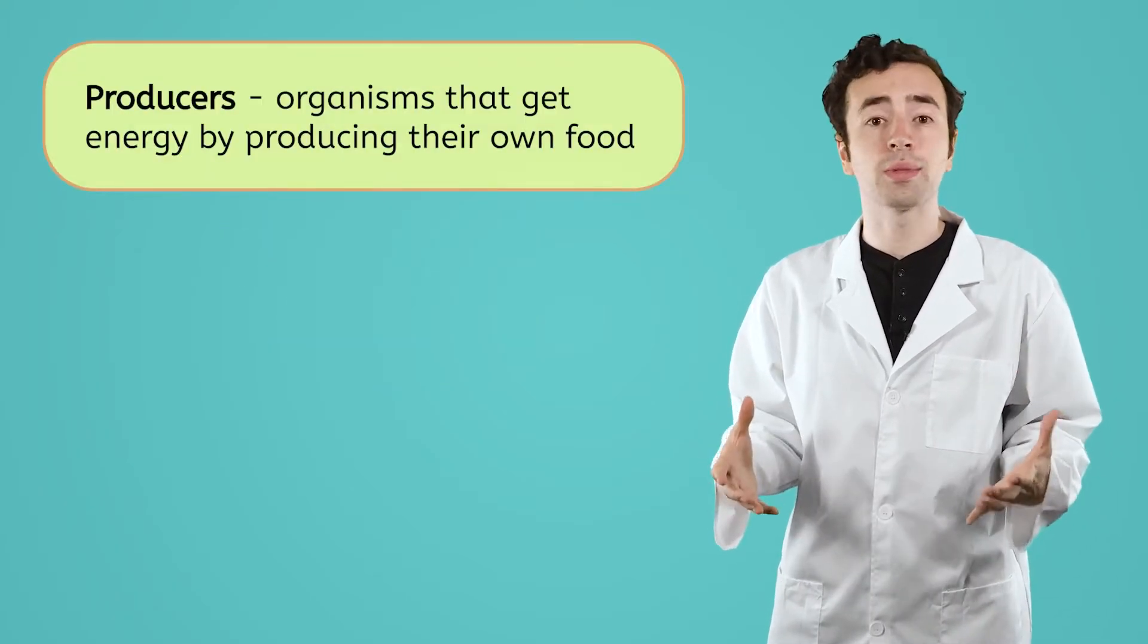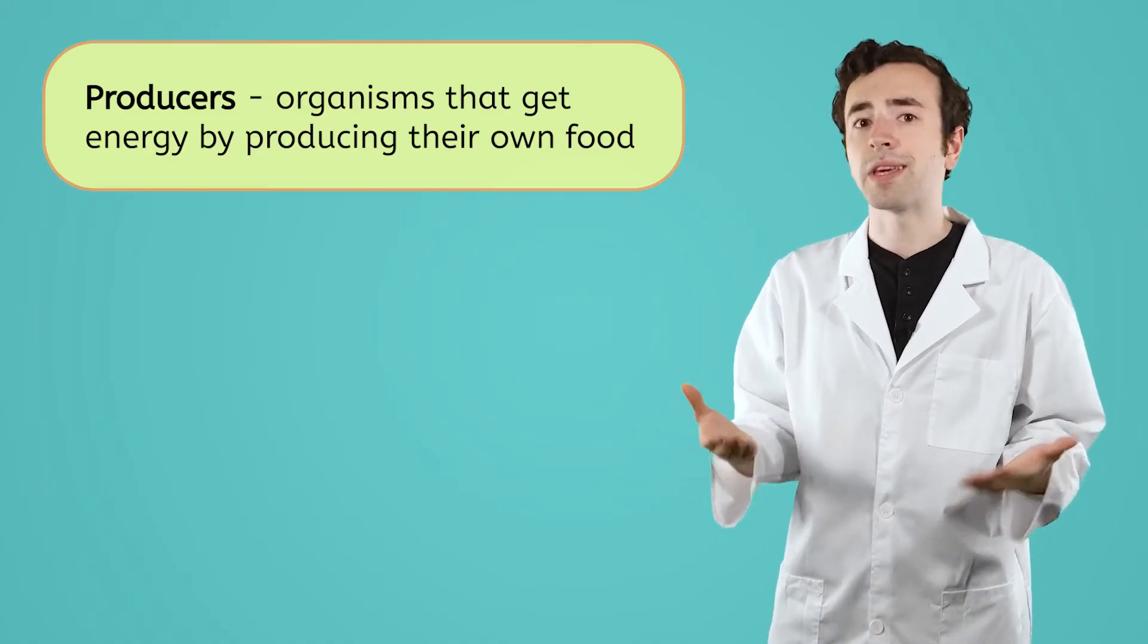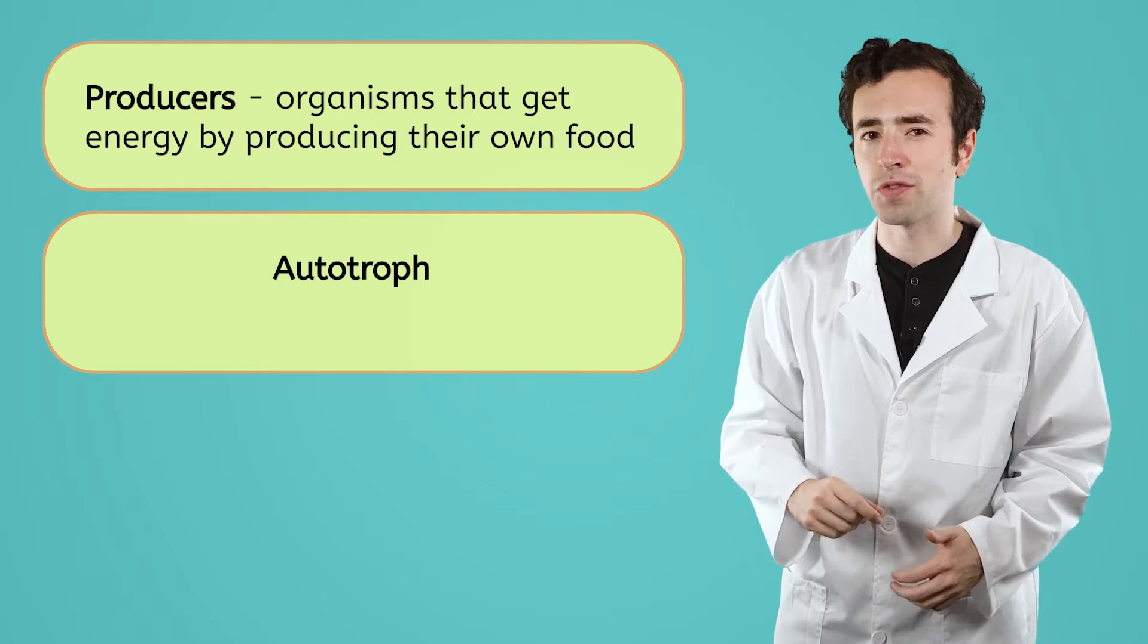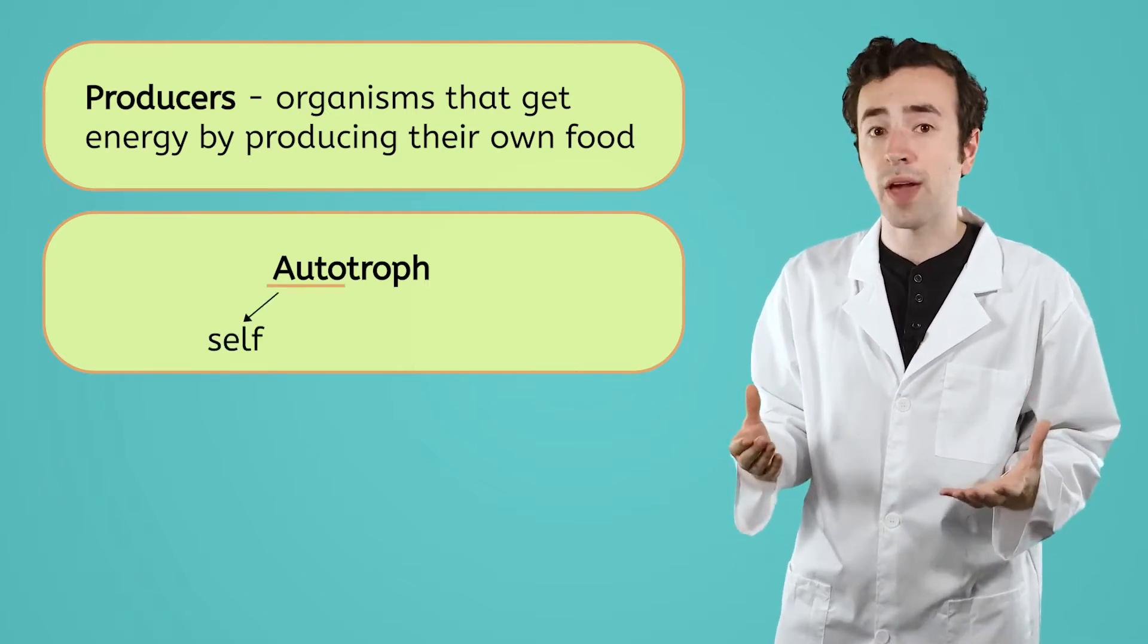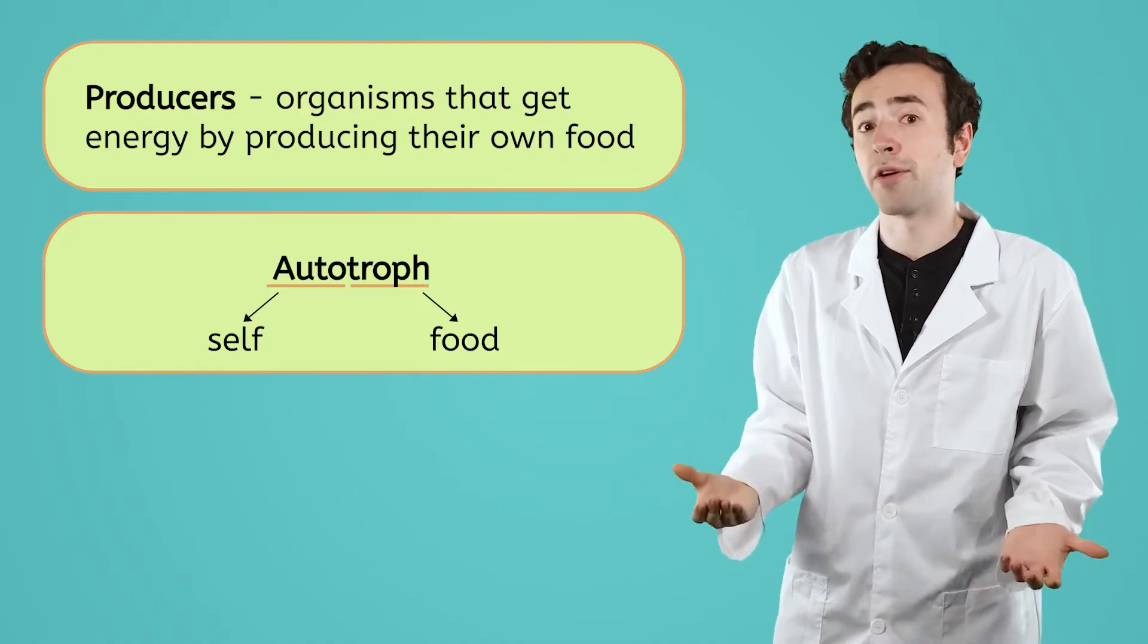Producers are organisms that produce, or create, their own food, mainly through photosynthesis. They are also called autotrophs. Auto meaning self, and trof meaning food. So autotroph just means they make food themselves.